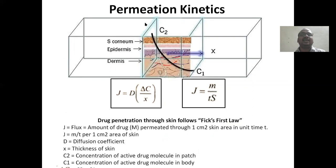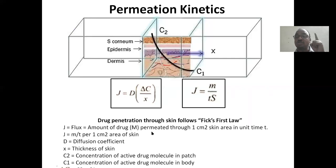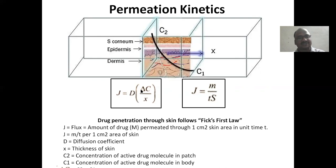For kinetics, consider a transdermal patch applied over one centimeter square of skin, with stratum corneum, epidermis, and dermis. C2 is the drug concentration in the patch; C1 is the concentration in the blood. Delta C = C2 − C1. J (flux) is the amount of drug permeated through one centimeter square of skin per unit time. J = D × ΔC / X, where D is the diffusion coefficient and X is the thickness of the skin. Greater the thickness, lesser the permeation.